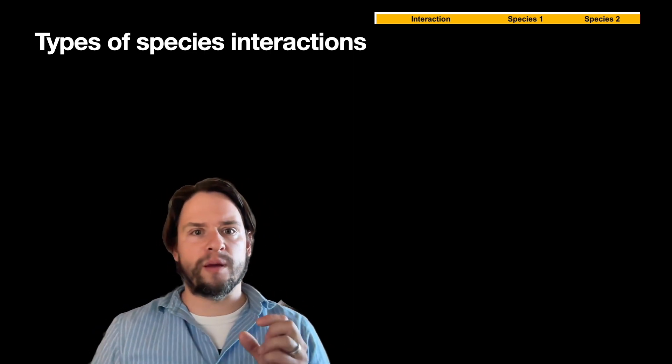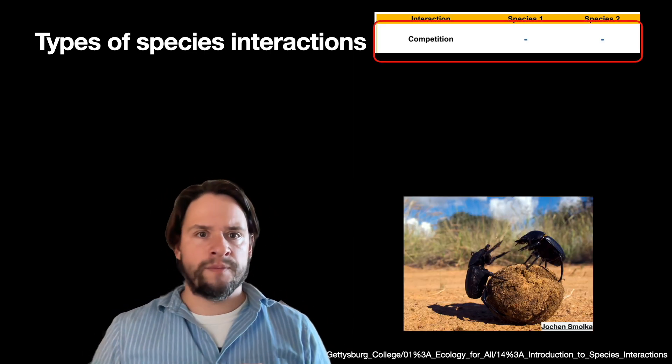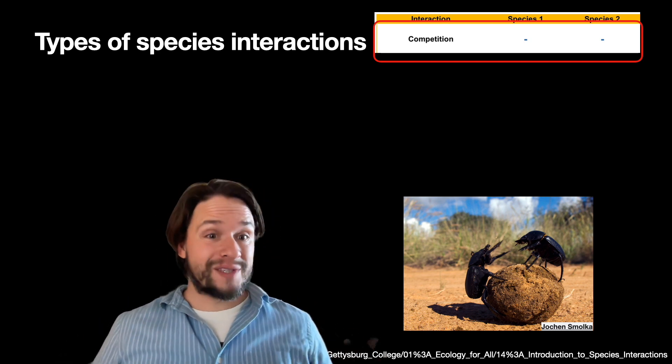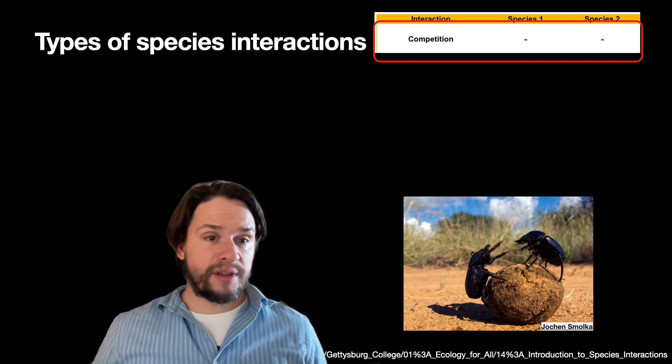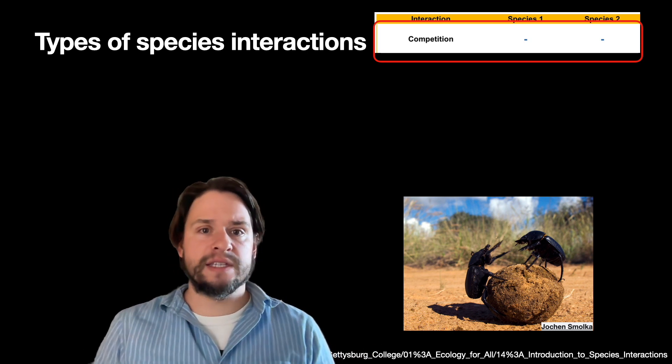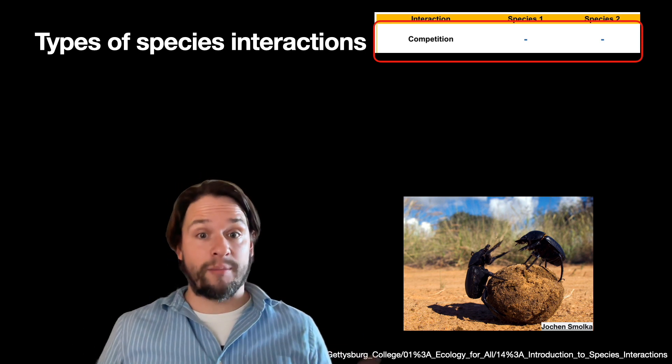So for example, if we think about two species, we can think about categories of interactions where both species are actually negatively affected, so they don't gain any benefit or are actually impaired in growth or fitness. We often think of those as competition.